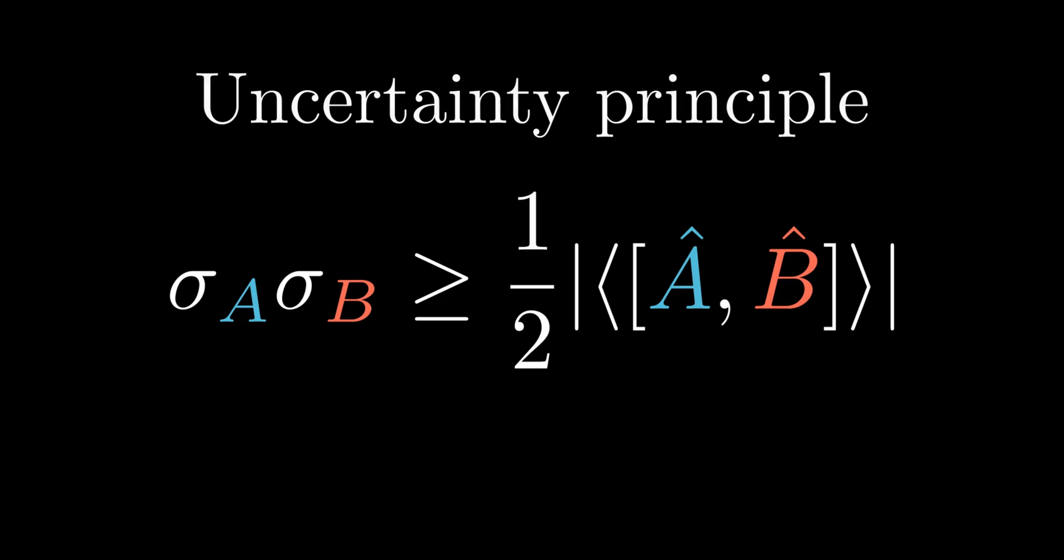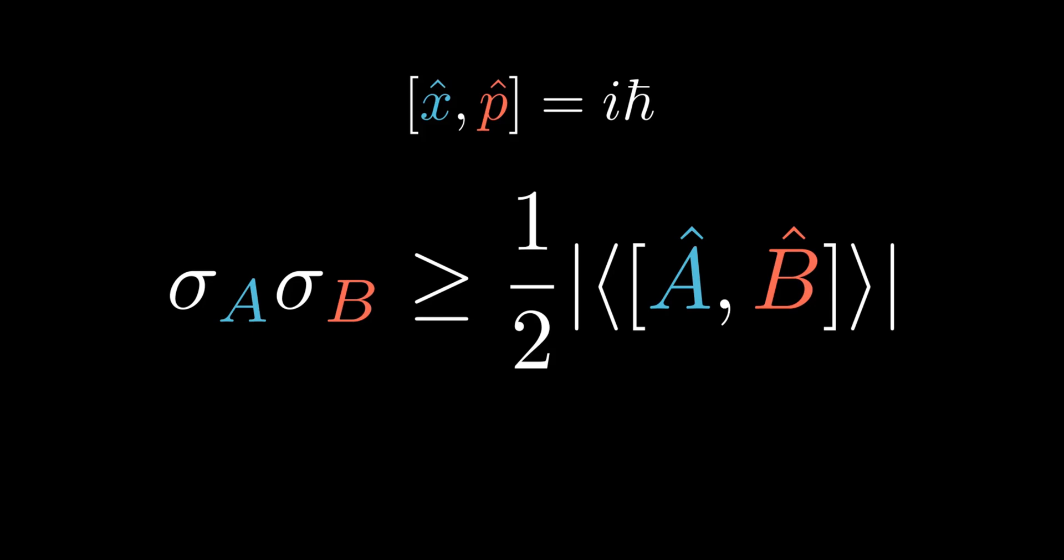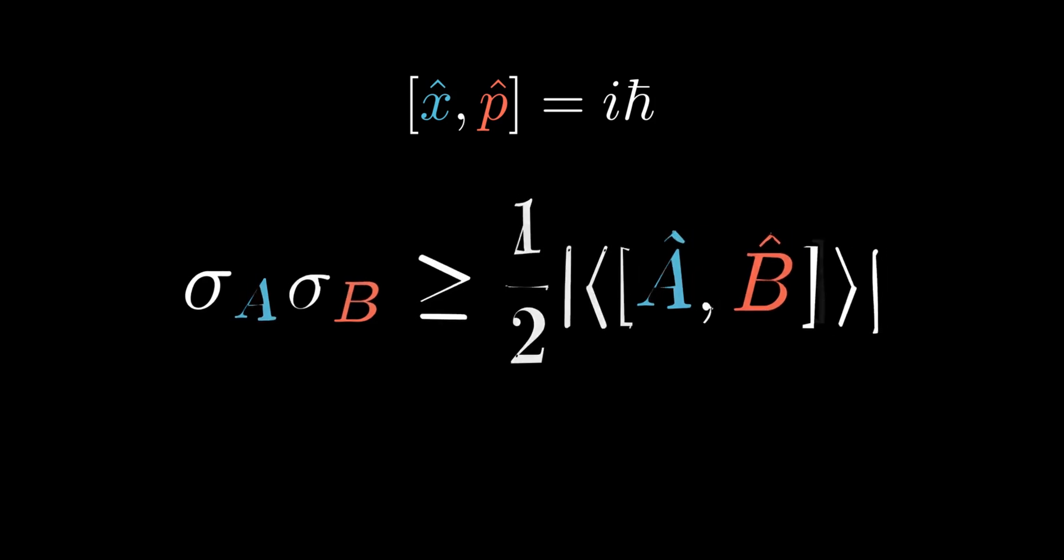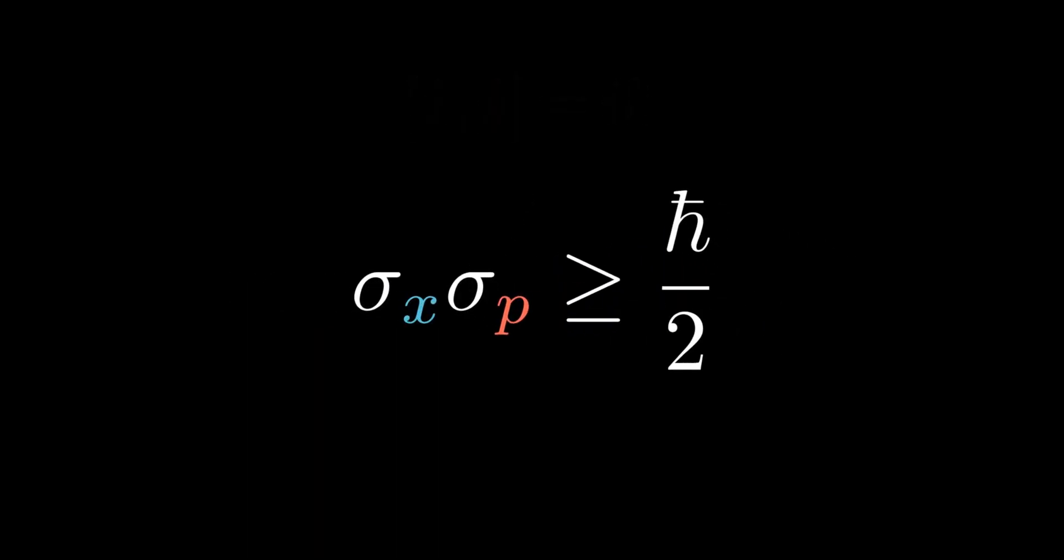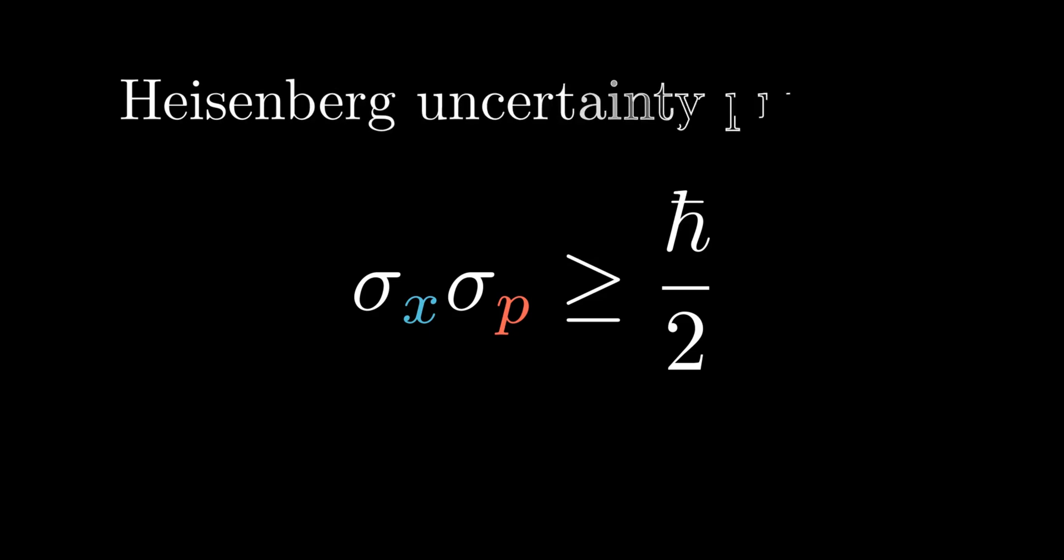One of the most important equations in quantum mechanics is the canonical commutation relation, which we shall derive in the next chapter. It says the commutator between the position and momentum operator equals to i h-bar. Substituting into the uncertainty principle directly leads to the Heisenberg uncertainty principle, where the product of the uncertainties in position and momentum is greater than or equal to h-bar over 2.